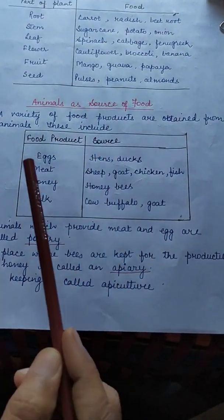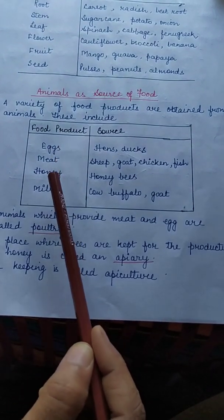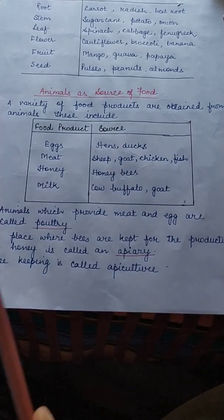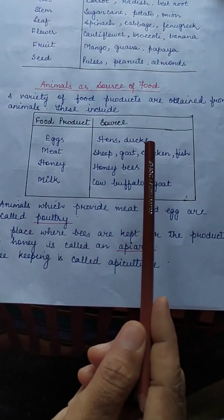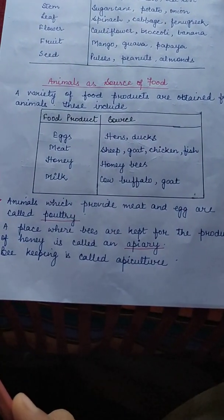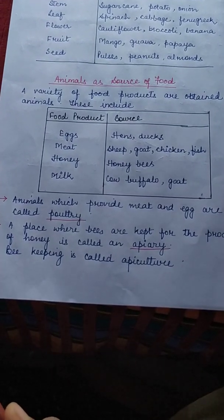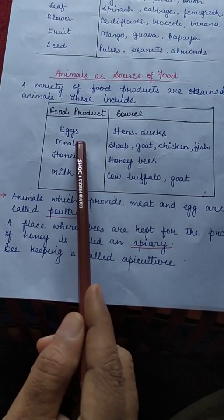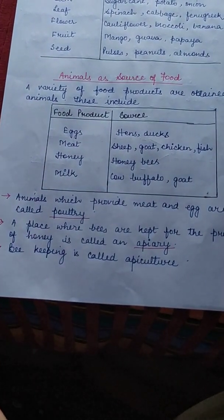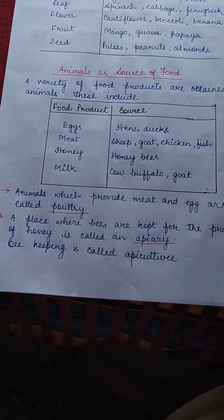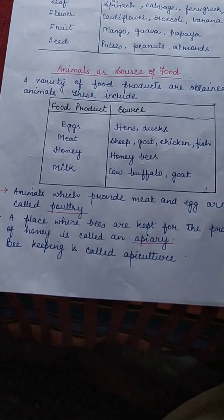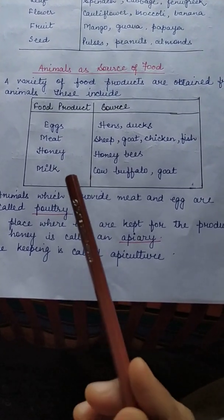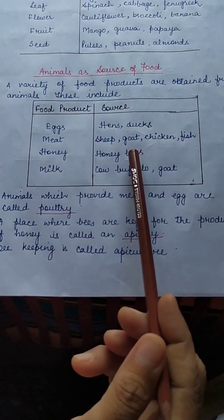A variety of food products are obtained from animals. These include eggs, meat, honey, and milk. We get eggs from hens, ducks, etc. Sheep and goats are some animals that provide us with meat. Honeybees make honey from the nectar of flowers and store it in their hives, from which we extract it. So we get honey from honeybees.